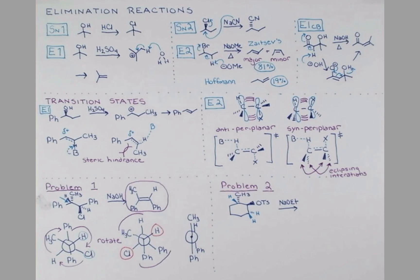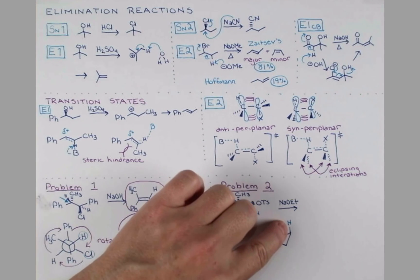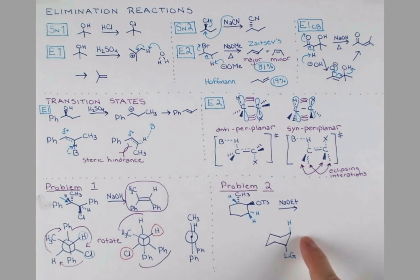So let's draw our chair. Begin with your two parallel lines, draw two more parallel lines, and finally connect everything. Now in order to adopt the anti-periplanar geometry on the chair, we actually need our groups to be axial. So we'll have an axial hydrogen atom and an axial leaving group will allow for the anti-periplanar geometry.